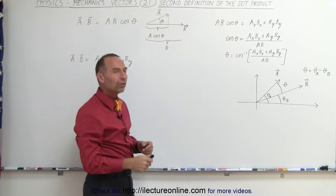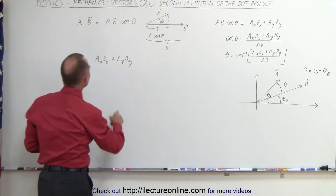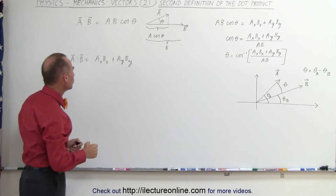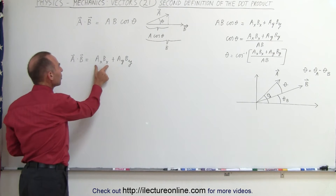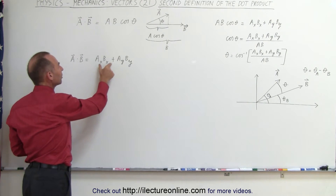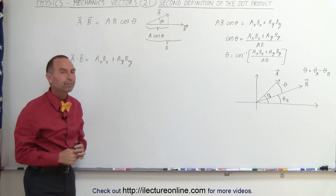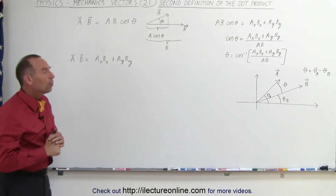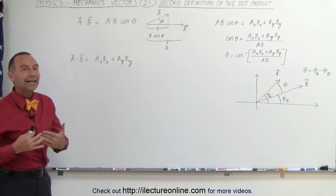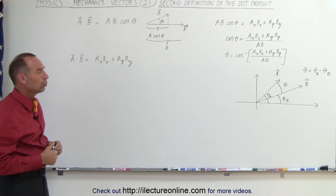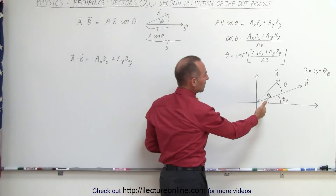But one of the viewers questioned: how do you know that this is true? How do you know that A dot B is equal to the x components multiplied together, plus the y components, plus the z components, and so forth? So what I wanted to do is show you why that is indeed true, and that can be done in general using this graph right here.